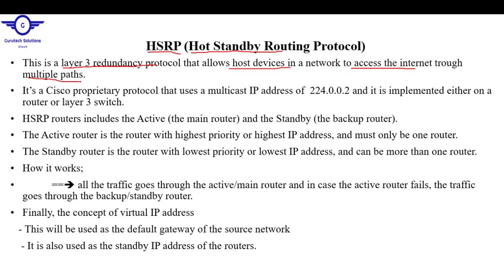Another thing — HSRP is Cisco proprietary, meaning it can only be used with Cisco devices. Huawei, HP, or Juniper devices cannot use HSRP because it is not a standard protocol. It is only a Cisco proprietary protocol. It uses a multicast IP address, and this protocol works on either a router or a layer 3 switch, since both are layer 3 devices.